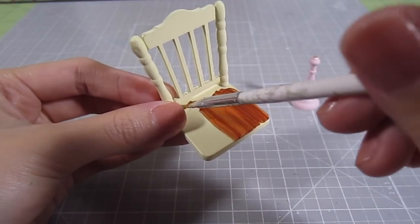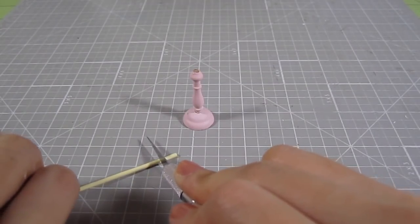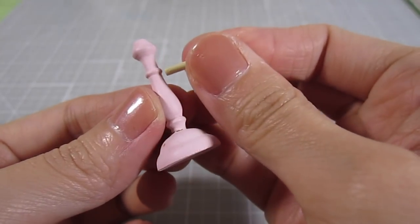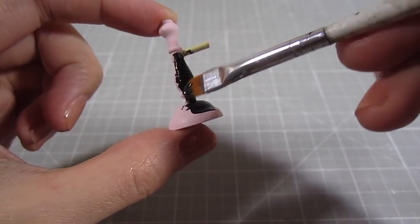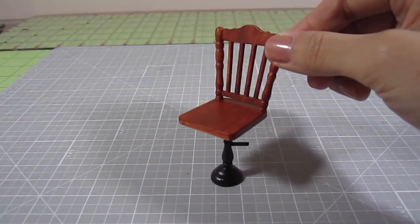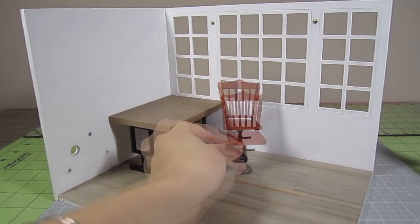I paint the chair light brown. For the base, first cut a tiny length of a thin stick. Glue it to the side of the pink piece, creating the look of an adjustable height lever. Then paint the entire base black. Glue the base to the chair. And then glue the whole chair into the room.